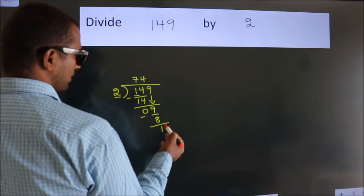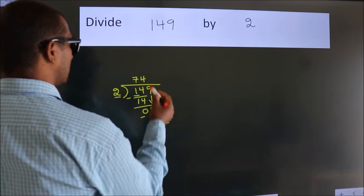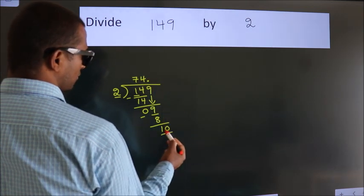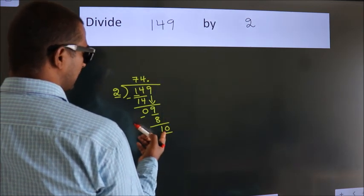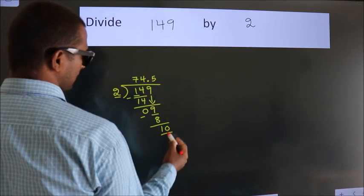After this, no more numbers to bring it down. So what we do is, we put dot, take 0. So 10. When do we get 10? In 2 table, 2 fives, 10.